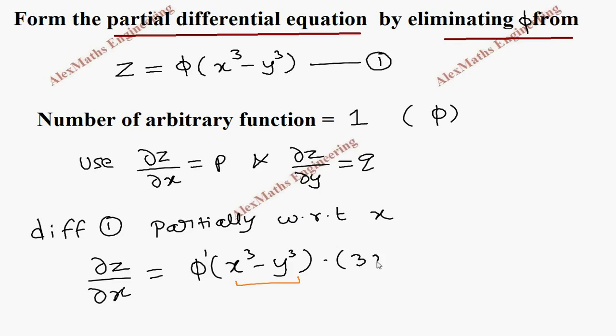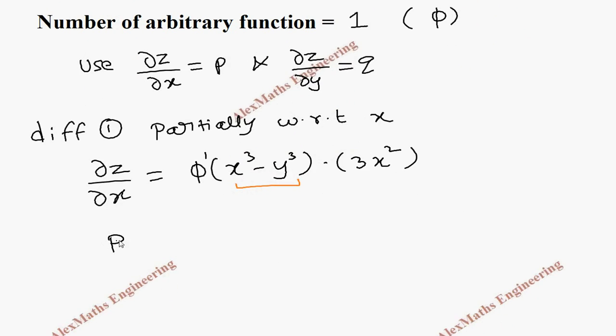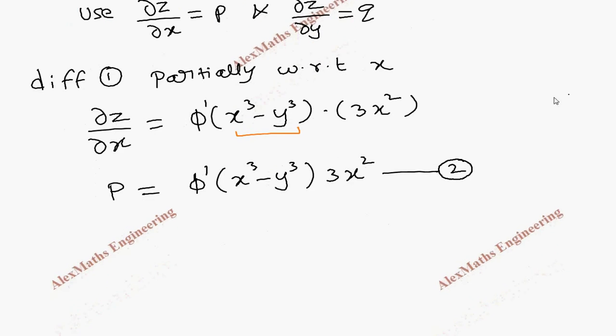Which is 3x², and the second term y² is constant because we are doing partial derivative with respect to x, so other variables are treated as constants. Now this is p equals phi dash of (x³ - y³) into 3x². Let's keep this as the second expression.